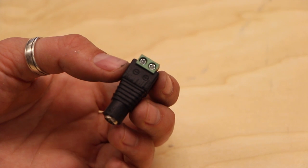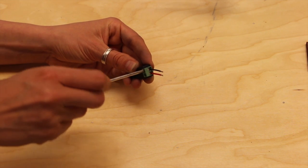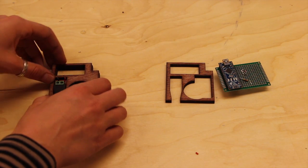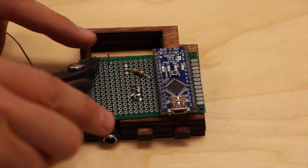To power the circuit, begin by screwing two wires into the positive and negative terminals of the DC power adapter. Assemble the three layers of the circuit case to help align the wires on the protoboard. Solder the wires to the board and snip the leads.